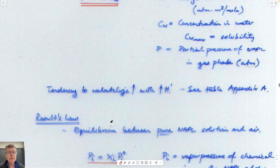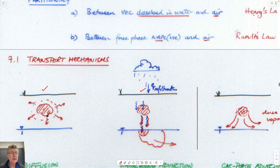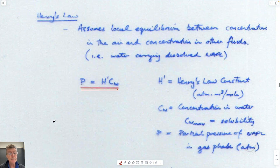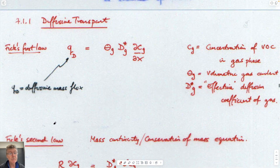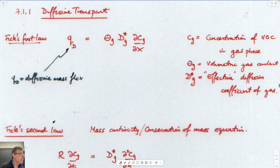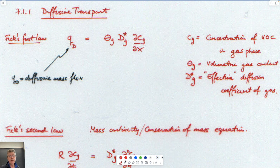To look at the first mechanism — diffusive transport — we can go back to Fick's law for diffusion only, where we have no advection. This is Fick's first law: the concentration gradient multiplied by a diffusion coefficient. Because flow is only in the gas-filled pore space, there is a pre-multiplier that is the volumetric gas content — the gas-filled void volume divided by the total volume — giving a diffusive mass flux of mass per unit area per unit time.